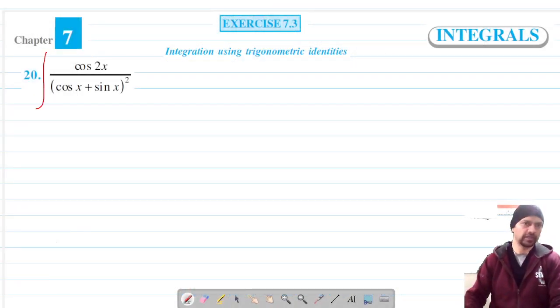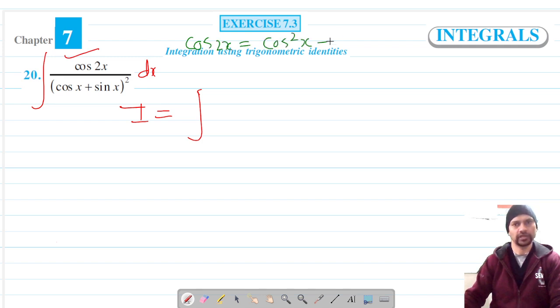Welcome to Prism Science Academy classes. We are on to question number 20. Let the integral be I. Now, cos2x has this variation: cos2x equals cos²x minus sin²x.